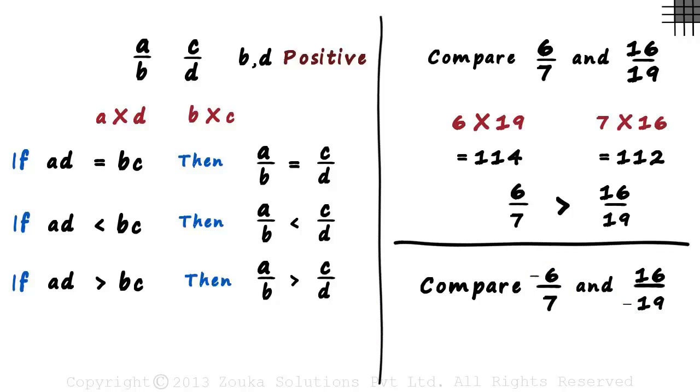Of course we can. We just write the second rational number differently. It's the same as asking us to compare minus 6 by 7 and minus 16 by 19. These two rational numbers have the same value. So keep in mind, if the denominators are positive, we can use this technique to compare the two rational numbers.